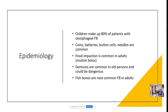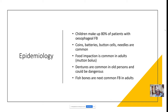Epidemiologically, children make up nearly 80% of patients with esophageal foreign body. The common esophageal foreign body in children is a coin, battery, button battery, or needles — common household items littered on the floor. Food impaction is very common in adults; for example, a mutton piece can get stuck in the cricopharynx. Invariably, food impaction is commonly seen in patients with malignant stricture or malignancy of the esophagus.